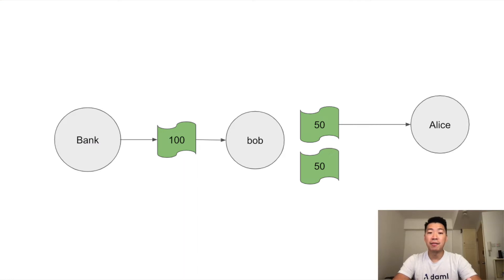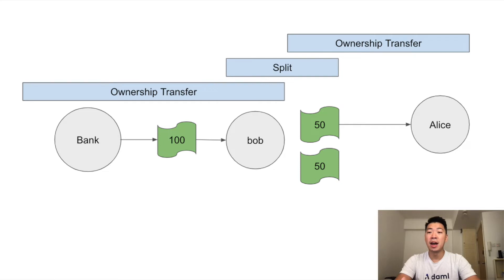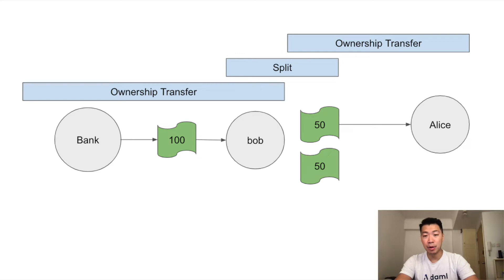Here we can see a flow where Bob gets a hundred dollars from the bank and then Bob splits that hundred dollars into two fifty dollars and gives fifty dollars to Alice. The actions happening here include an ownership transfer, a splitting, and then another ownership transfer. In the real world it's quite straightforward to just give a bill to someone.